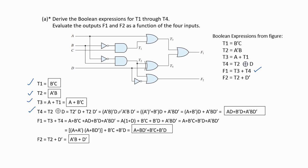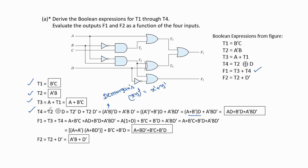t4 = t2 XOR d. The XOR formula is t2'd + t2d'. Where t2 = a'b, therefore: (a'b)'d + a'b·d'. Here we apply DeMorgan's law. The generalized expression is (xy)' = x' + y'. Assuming a' as x and b as y, we get (a')' + b' = a + b'. Therefore t4 = (a + b')d + a'b·d', which expands to: a·d + b'd + a'b·d'.